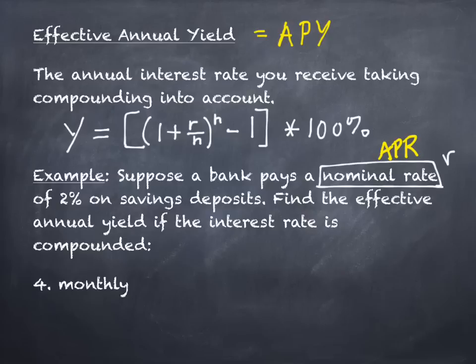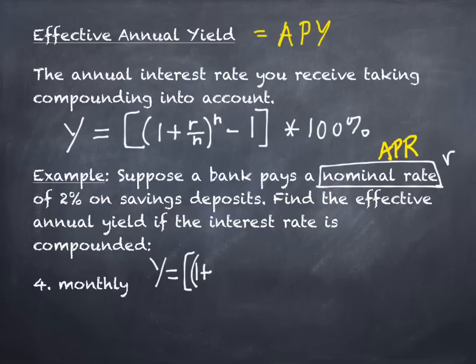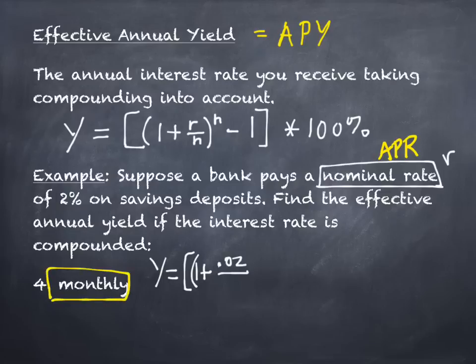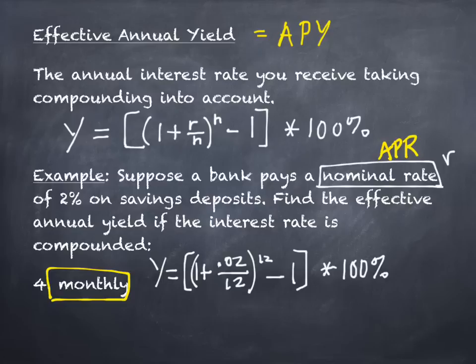The formula is Y equals the quantity 1 plus R over N, raised to the N, minus 1, times 100%. Suppose a bank pays a nominal rate of 2% on a savings deposit. Find the effective annual yield if the interest rate is compounded monthly. So R is 0.02 and N is 12.